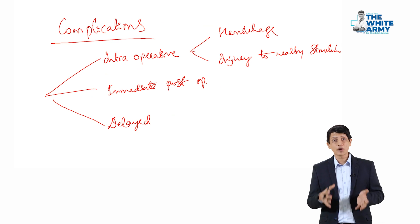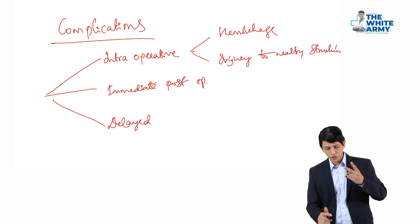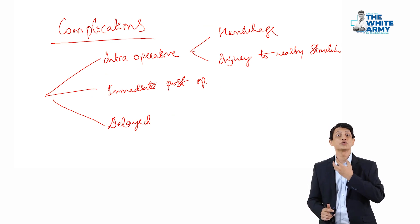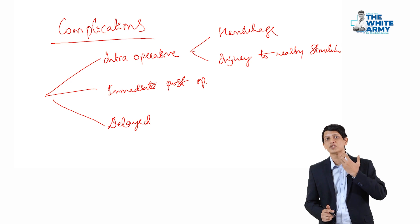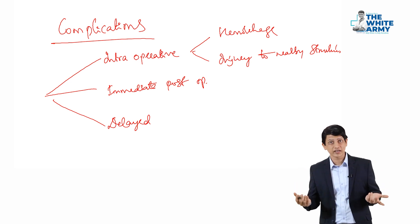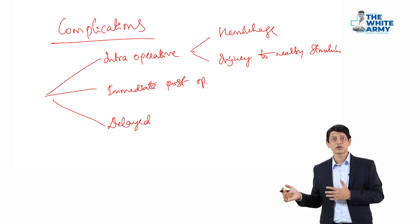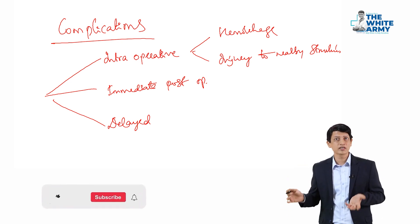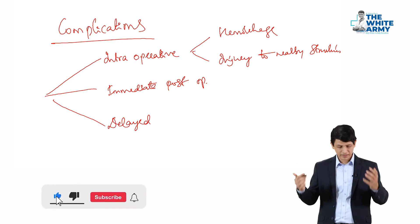If you want to discuss intraoperatively what can happen, I told you, only bleeding and injury to surrounding structures. Bleeding from the superior thyroid or inferior thyroid vessels. Injury to the surrounding structures like recurrent laryngeal nerve or superior laryngeal nerve or parathyroids, trachea, et cetera. Immediate postoperatively, there could be reactionary bleeding, seroma formation, et cetera.